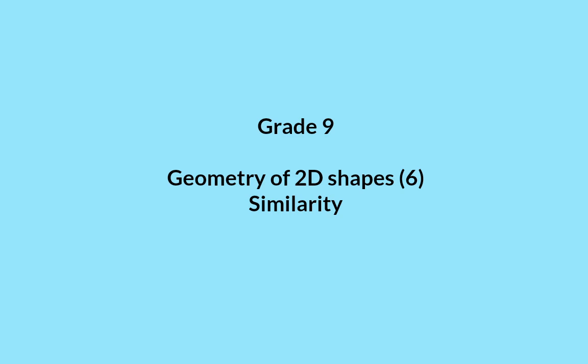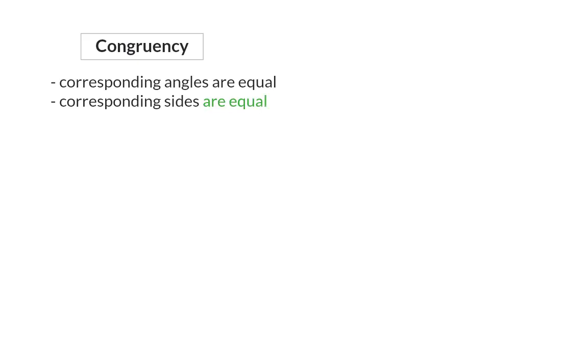In this video, we're going to have a look at similarity, and we're going to focus specifically on triangles. Remember that congruency means that the corresponding angles are the same size, as well as the corresponding sides being equal.